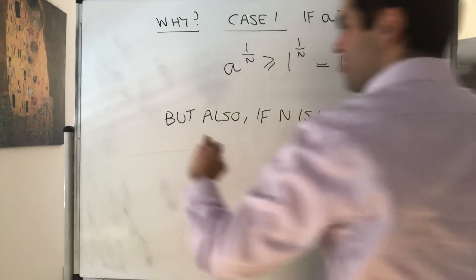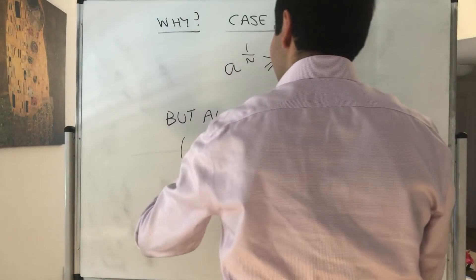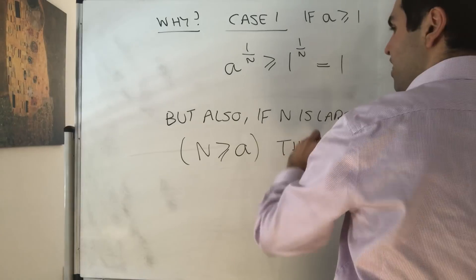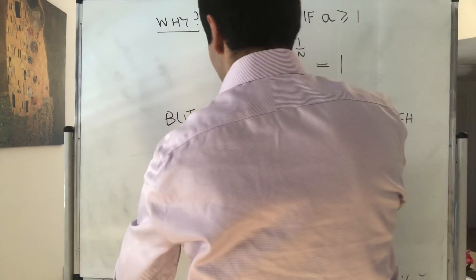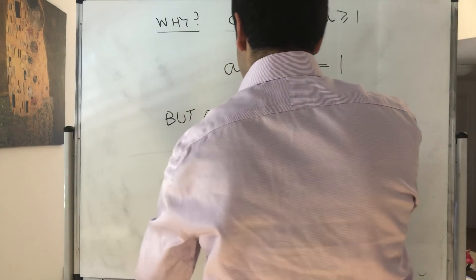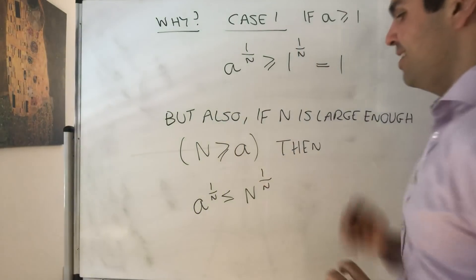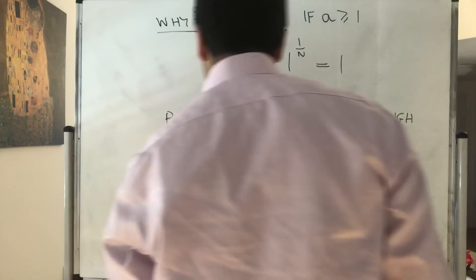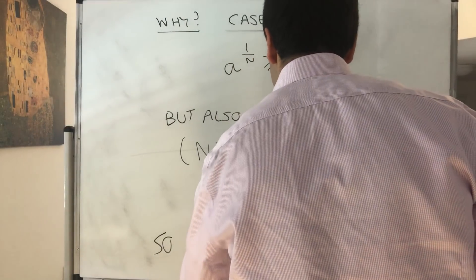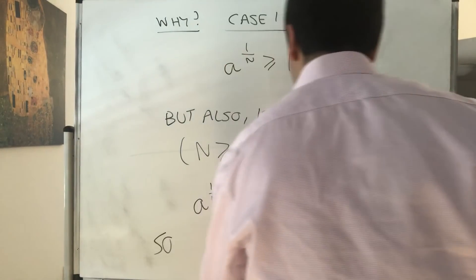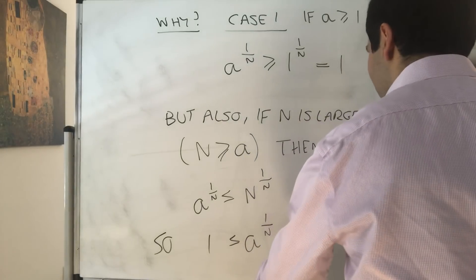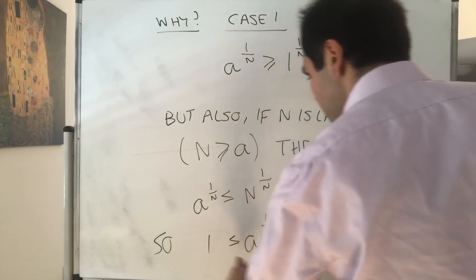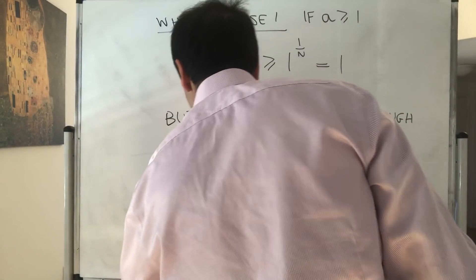What does large enough mean? In this case n is greater or equal to a, then a to the 1 over n is less than or equal to n to the 1 over n, just by taking nth roots. So what we get is a to the 1 over n is squeezed between 1 and n to the 1 over n. And by the previous result, we know this goes to 1 and this goes to 1.